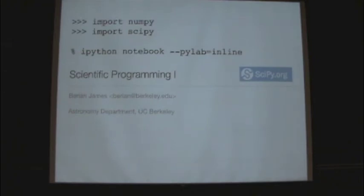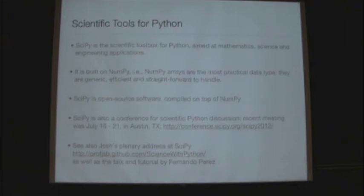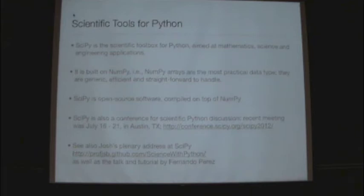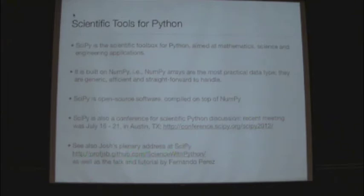SciPy is the scientific toolbox for Python. It's aimed at mathematics, science, and engineering applications. It's built on top of NumPy and included in the Enthought Python distribution. NumPy arrays are the most practical data type to use in this sort of data analysis — they're generic, efficient, and straightforward to handle within Python. SciPy is open source software. SciPy is also a conference held each year that focuses on scientific Python. There was a recent meeting a few weeks ago, including Josh's plenary address and a talk by Fernando Perez, all very worthwhile.